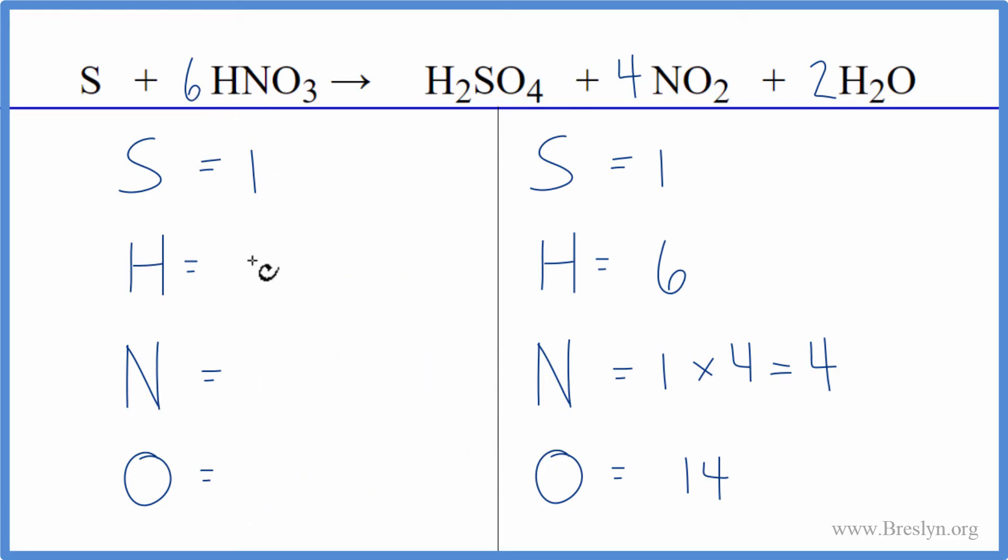So now I have one times six, that gives me six hydrogens, one times six, six nitrogens, three times six, that gives me 18 oxygens. So if I can somehow get four more oxygen atoms over here, I'll be balanced.